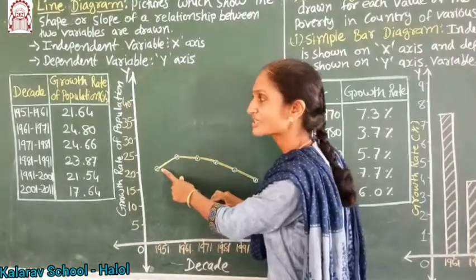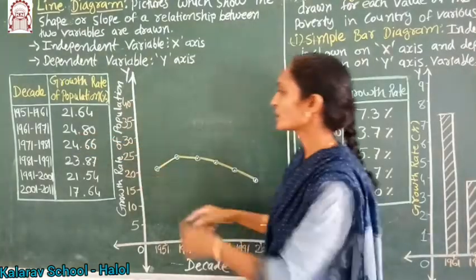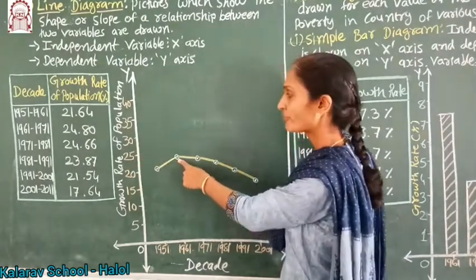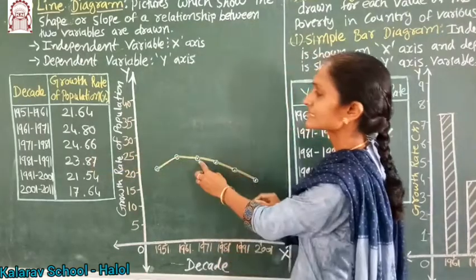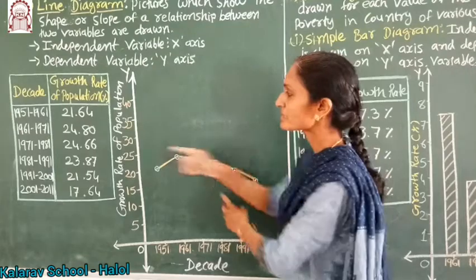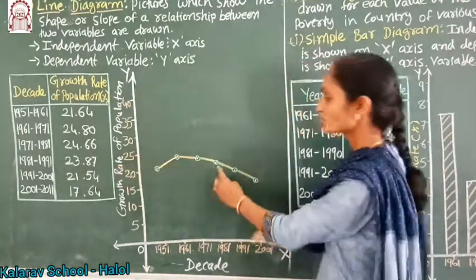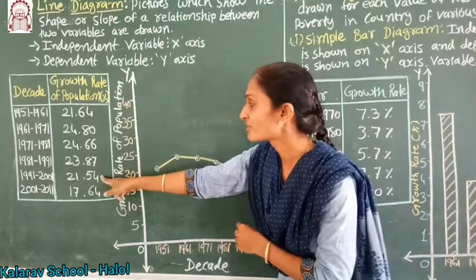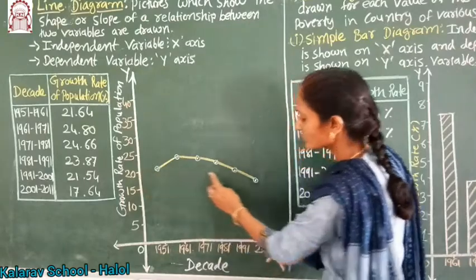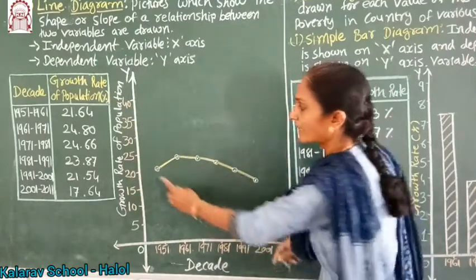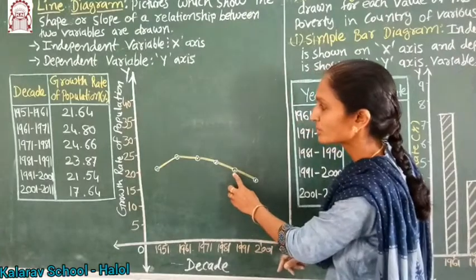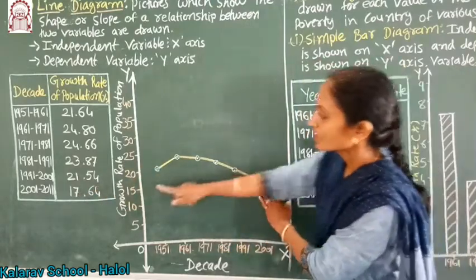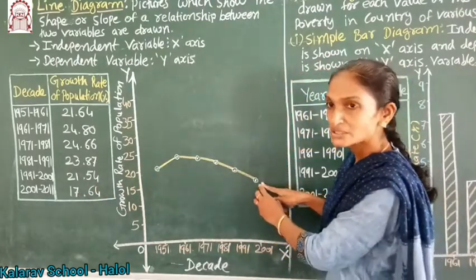We have placed this information of population growth rate in pictorial form. For 21.64, we place a dot just above 21 on the y-axis. For 24.80, that is just below 25 — near about 25. Then 24.66, near about 24. Then 23.87, placed at approximately 23.87. Then 21.54, we place near 21. And 17.64, placed near about 17.